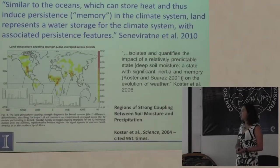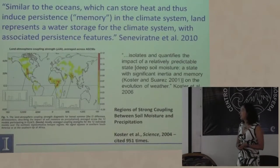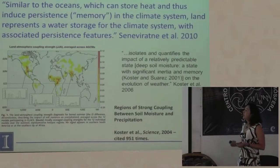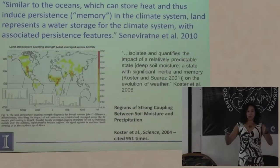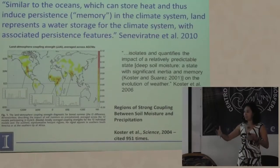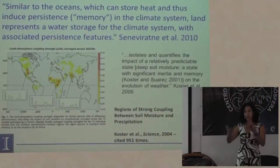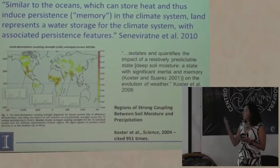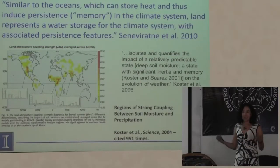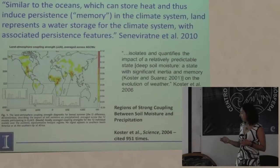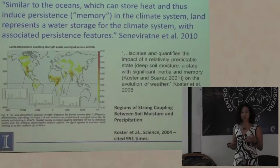¿Por qué estudiamos este tipo de interacciones del agua subterránea? Quiero dar una cita que dice que similar a los océanos que pueden almacenar el calor e inducir persistencia o memoria en el clima, la Tierra también representa almacenamiento de agua. Cuando llueve, la Tierra lo puede almacenar y luego se evapora después, y también se asocia con parámetros de persistencia. Lo que estoy mostrando aquí es el mapa icónico de las interacciones atmosféricas, hecho por Koster, publicado y citado tal vez mil veces.